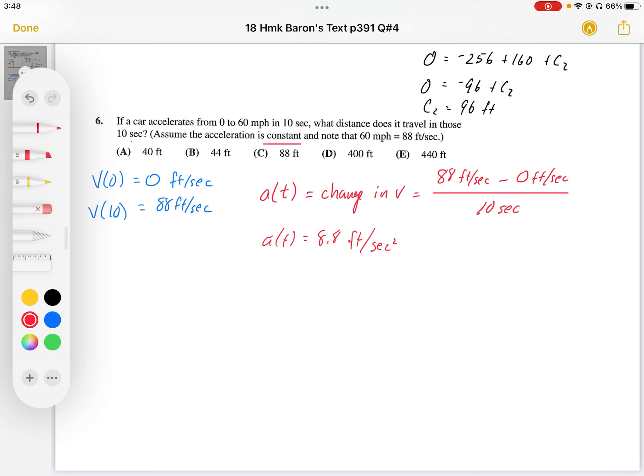So what distance does it travel in those 10 seconds? Well, first of all, I'm going to anti-differentiate this. So I want the v of t function, which is going to be the anti-derivative function of the acceleration. So 8.8 times dt. And so my v of t function works out to be 8.8 t plus our v initial, or plus c.